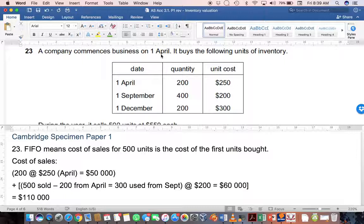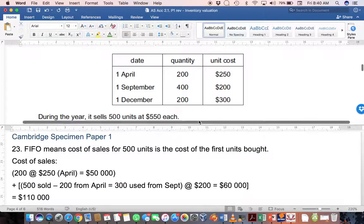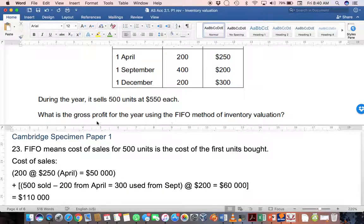A company commences business on 1st April, so there's no opening stock. It buys the following units of inventory. On 1st April it bought 200 at $250 each. On 1st September, 400 at $200, and 1st December, 200 at $300. So the price is actually fluctuating quite a lot. It then tells you it sells 500 units at $550 each. What is the gross profit for the year using the FIFO method?